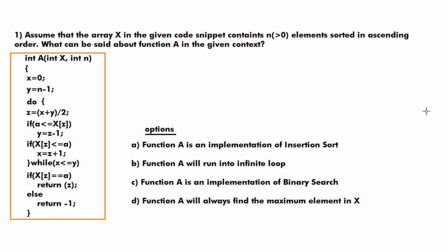The third option is that function a is an implementation of binary search. Binary search is an algorithm used to search for an element in a sorted array, and the given array is also sorted. The last option, that function a will always find the maximum element, is clearly wrong since the code finds the midpoint of the array, which is characteristic of binary search. So the answer is option C: function a is an implementation of binary search.